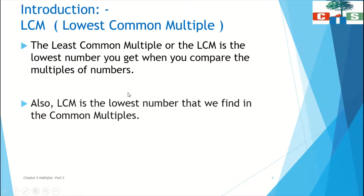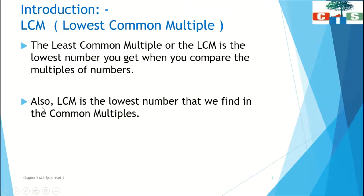One more definition: the LCM is the smallest number, or the lowest number, that we find in the common multiples. To find it, you first need to find the common multiples of the given numbers, and then the smallest number in that list will be the LCM. We will see this with the help of examples.